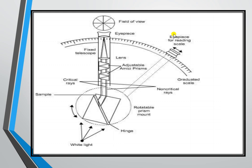When you look through the refractometer, your view shows a circular diagram with a light-dark boundary and a scale. The instrument has two eyepieces — one for the scale and one for adjusting your view.